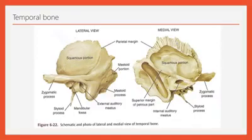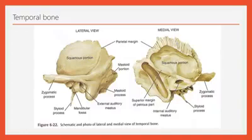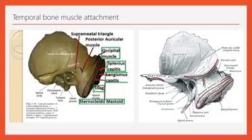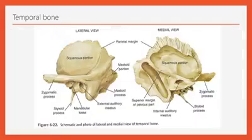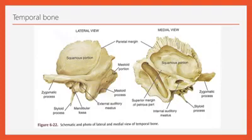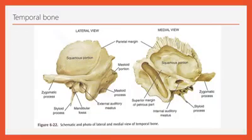The anterior inferior border articulates with the greater wing of the sphenoid bone. The tip of the zygomatic process articulates with the temporal process of the zygomatic bone and forms the zygomatic arch. The lower end of the zygomatic process presents the tubercle of the zygomatic process. Laterally there is attachment of the temporomandibular ligament. Below the zygomatic process there is the mandibular fossa. The anterior articular part of this fossa articulates with the head of the mandible to form the temporomandibular joint, which is a condylar type of synovial joint. There is also a posterior non-articular part.